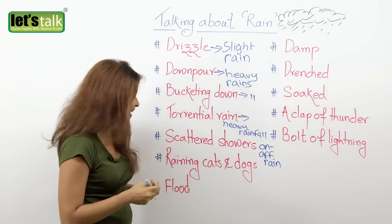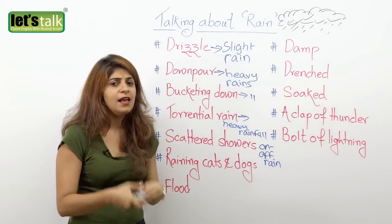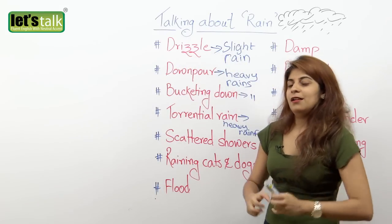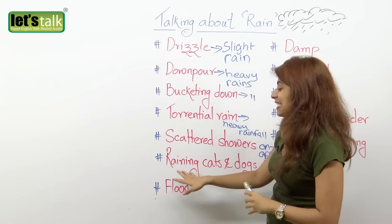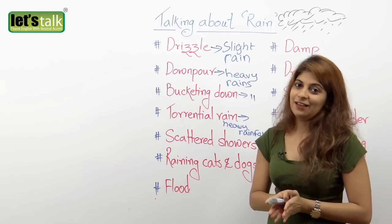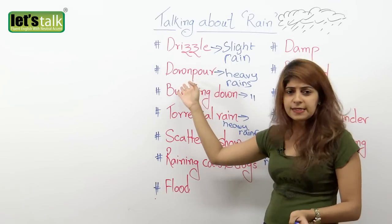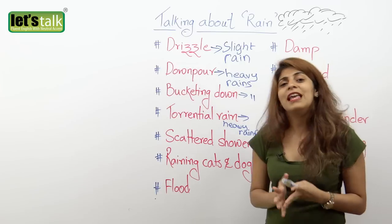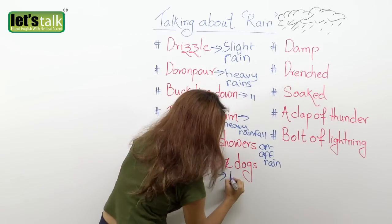Next one: it's raining cats and dogs. Have you heard that before? Well, cats and dogs are not falling from the sky. It's an idiom that you can use when it's raining heavily. So rather than just saying it's bucketing down or a crazy downpour, another idiom you can use is: it's raining cats and dogs. So it means it's raining heavily.